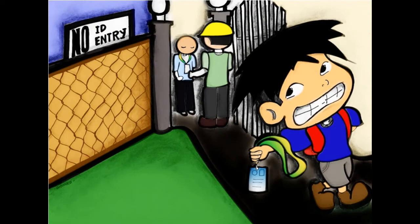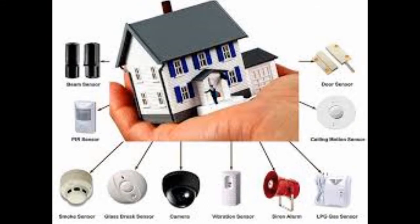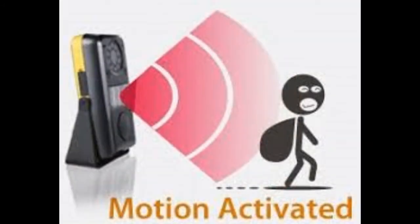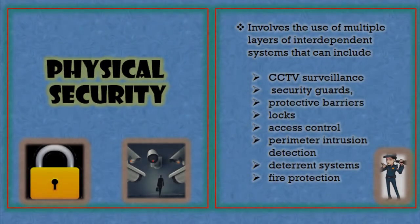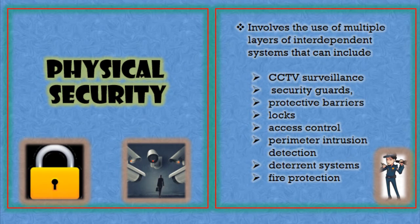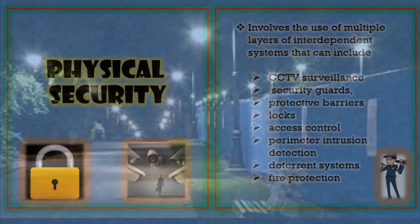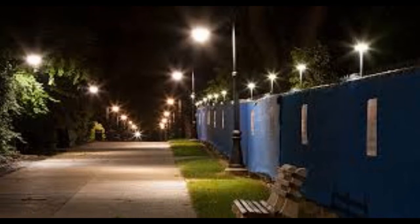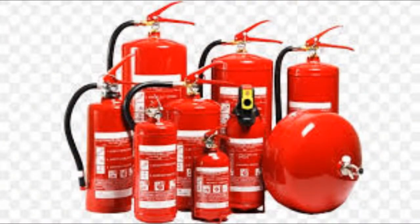Next we have perimeter intrusion detection — the use of sensors such as vibration detection sensors and movement detection sensors. We will know more about those as we go on in this lesson. Another one is the so-called deterrent system, which includes protective lighting. Protective lighting serves as a deterrent system, including what we call a psychological deterrent.